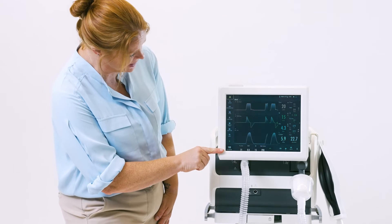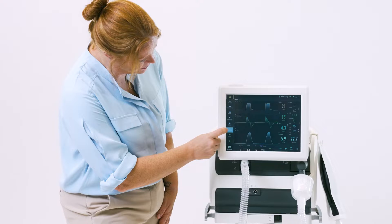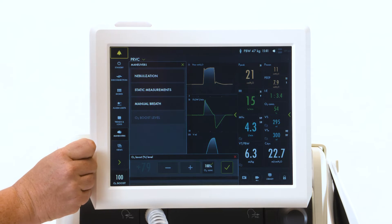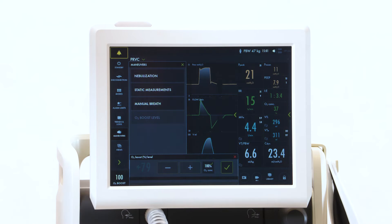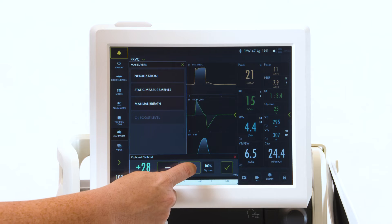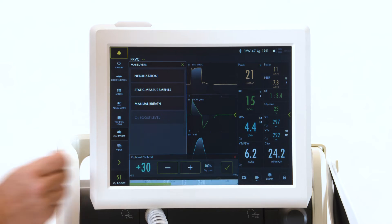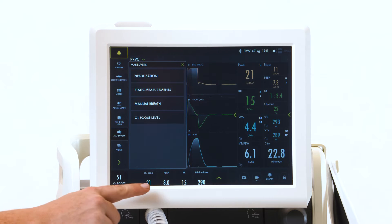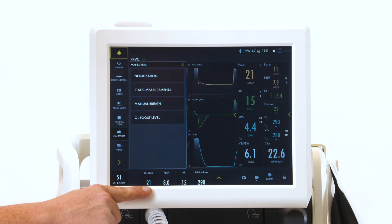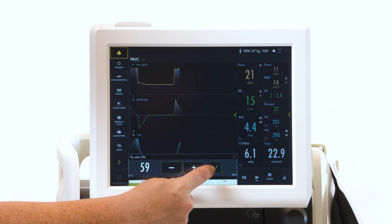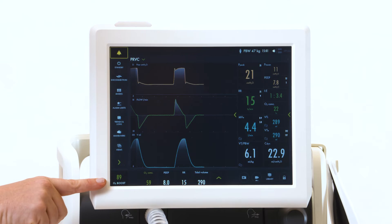If you'd like to adjust that, go to your maneuvers and select O2 boost level. Currently, you can see it is locked in to 100%. You can unlock it and adjust this to whatever you would like. When you hit the check mark, it will then set your O2 boost at that amount above your set FiO2. As you change your oxygen, your O2 boost level will automatically change.